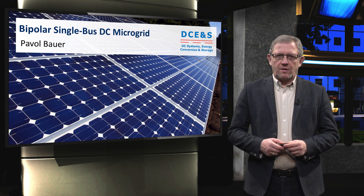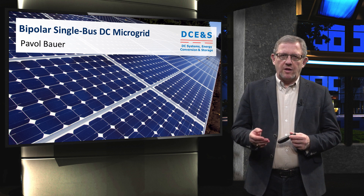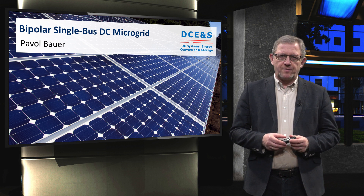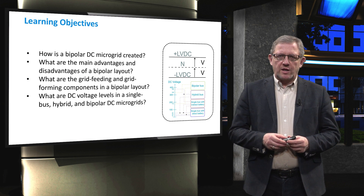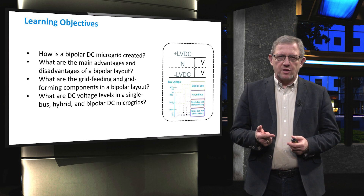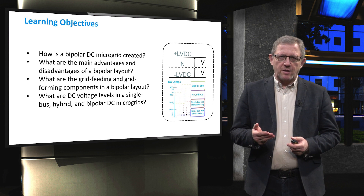In the previous videos we pointed out single and hybrid bus layouts for DC microgrids. In this video we finalize this week by addressing the bipolar single bus DC microgrid. The main learning objectives fall under four main questions: how a bipolar DC microgrid is created, what are the main advantages and disadvantages of a bipolar layout, what are the grid feeding and grid forming components in a bipolar microgrid, and what are the DC voltage levels in single bus, hybrid, and bipolar DC microgrids?